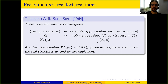Moreover, two real varieties X/mu1 and X/mu2 are isomorphic if and only if mu1 and mu2 are equivalent. So the notion of real forms and isomorphism classes on the one hand, and real structures and equivalence classes on the other, are two sides of the same coin.